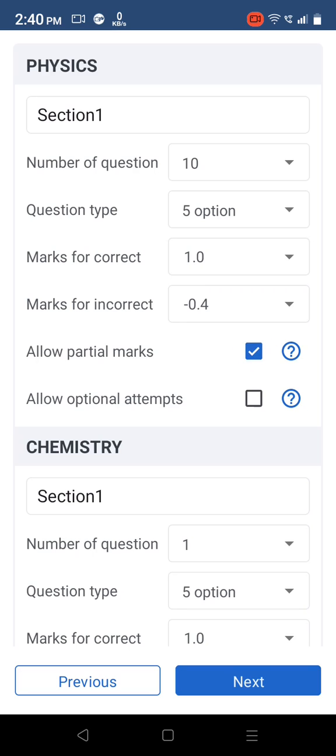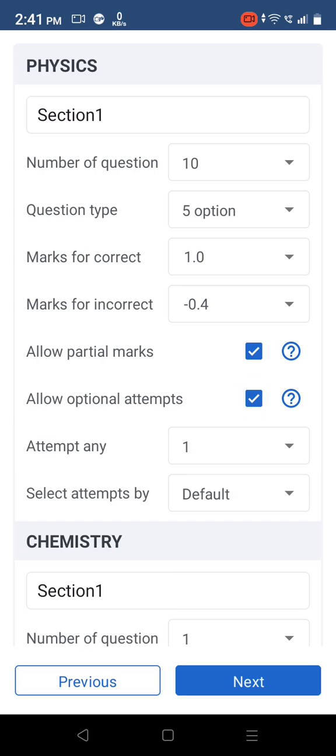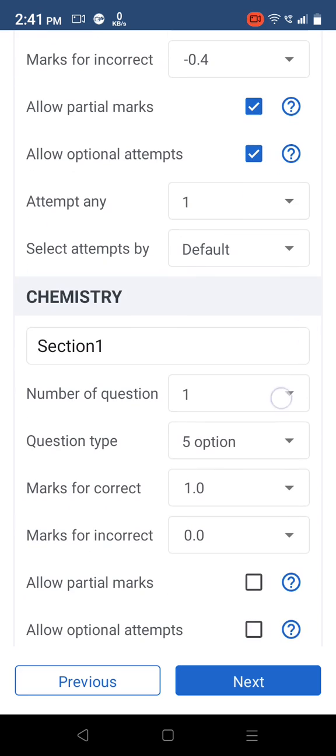Check on Allow Partial Marks for allotting marks for partially correct attempts and custom marking settings. Check on Allow Optional Attempt to allow students to make a choice of attempting some number of questions for the section.